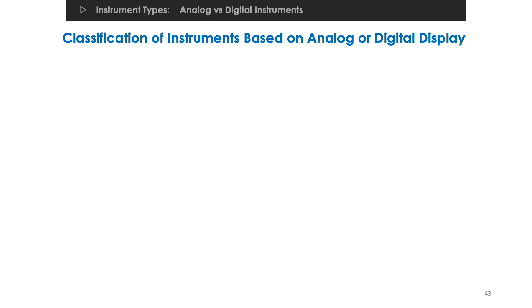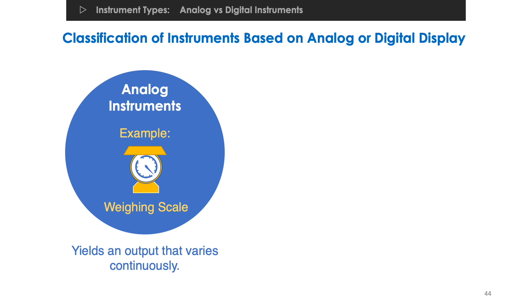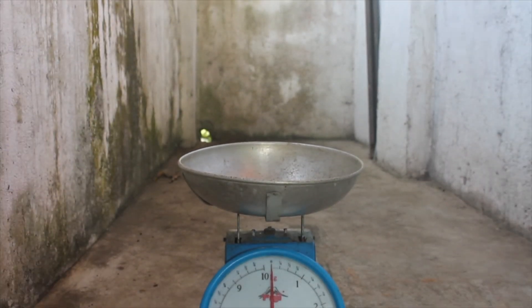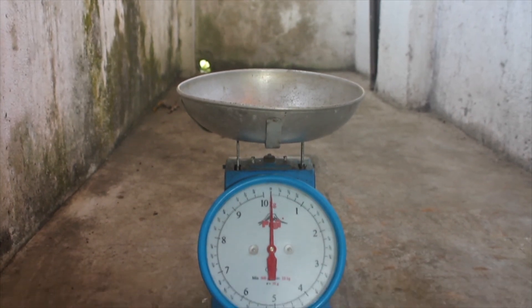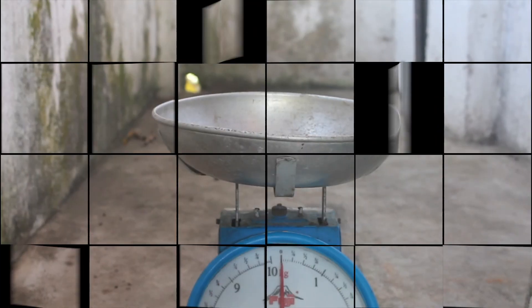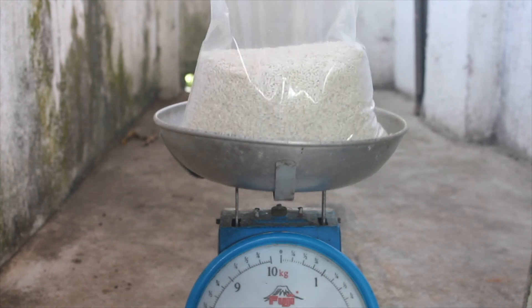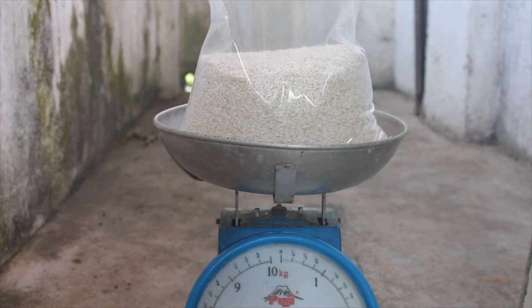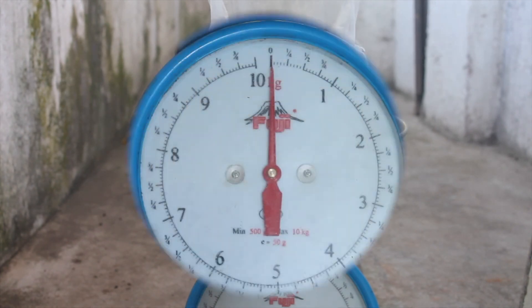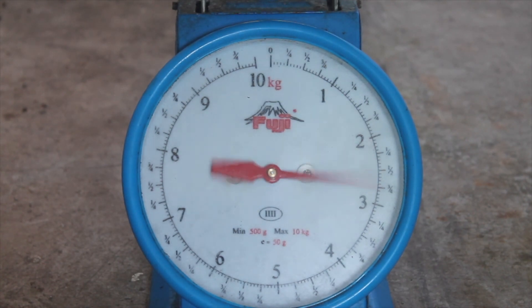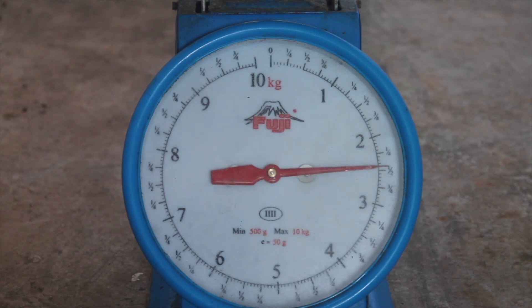Instruments can also be classified whether they display a measurement output that varies continuously or they display an output that varies in discrete amount. An analog instrument is an instrument that displays an output that varies continuously. Returning to our weighing scale, even if the label increases in discrete steps, the pointer is deflected in a continuous manner. It can display a value of 2 kilograms or 2.4 kilograms or 2.41 kilograms or 2.415 kilograms and so on.